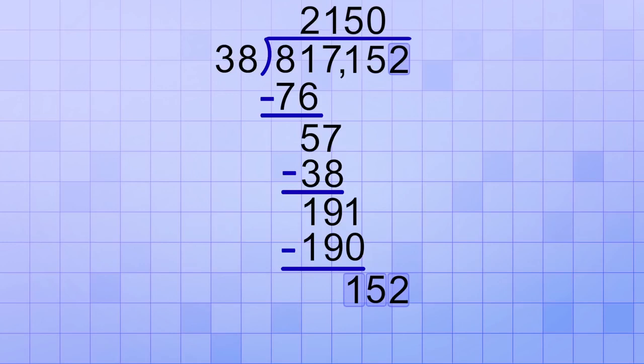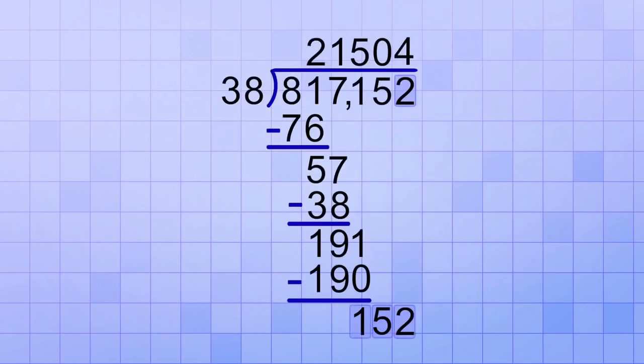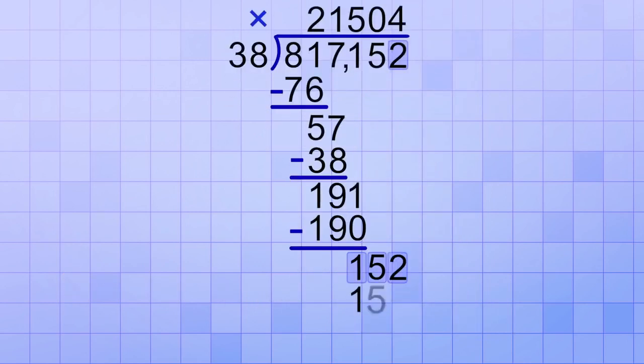We bring down a copy of the 2, and combine it with our remainder of 15. Now we ask, how many 38s will it take to make 152? To estimate this one, I'm going to round those numbers to 40 and 160. And since 4 times 40 equals 160, I'll put 4 in the answer line as my estimate. 4 times 38 equals 152. And 152 minus 152 leaves no remainder. And we're done.